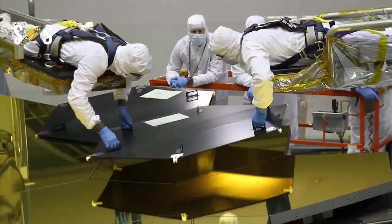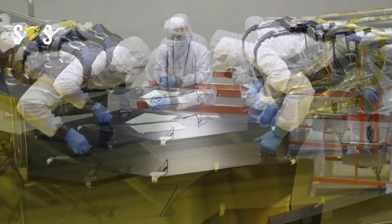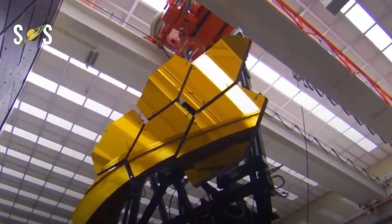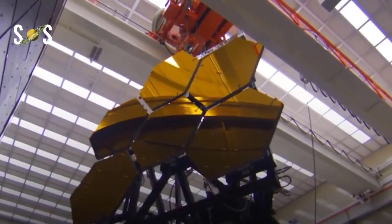Beryllium is a good conductor of electricity and heat, and is not magnetic. Because it is light and strong, beryllium is often used to build parts for supersonic airplanes and the space shuttle.